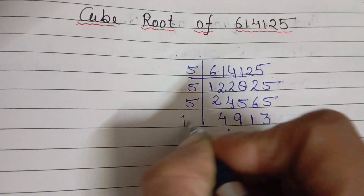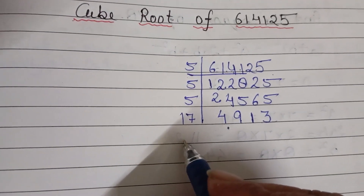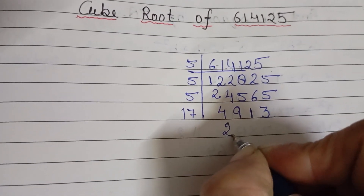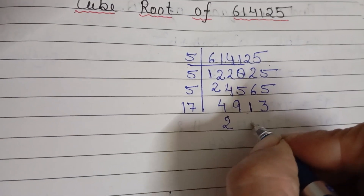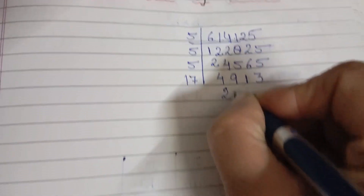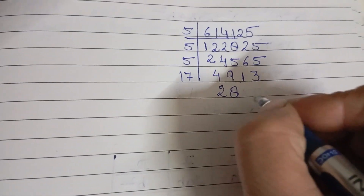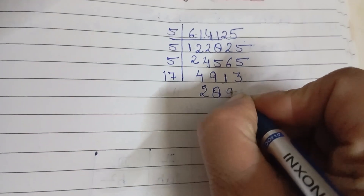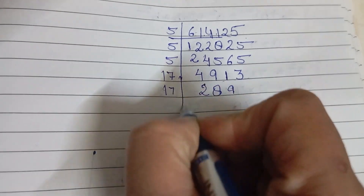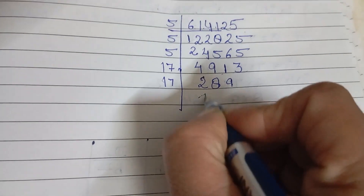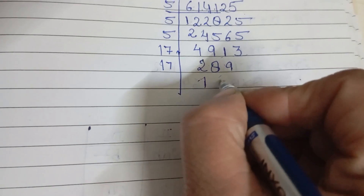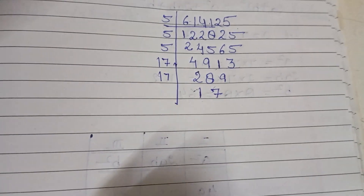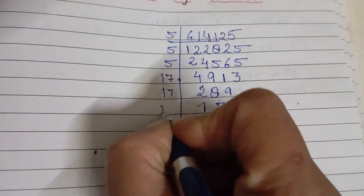4913 is divisible by 17, and 17 is a prime number. So 17 into 1 is 17; 17 into 2 is 34. After subtraction, 17 eights are 136; then 17 nines are 153 — again it is divisible by 17. So 17 ones are 17, remainder 17; 17 sevens are 119. Okay, now it is also divisible by 17.